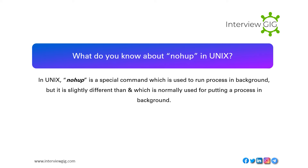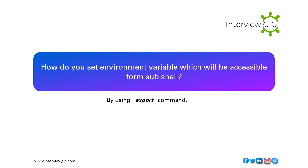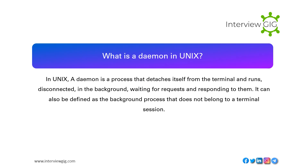What do you know about nohup in Unix? Nohup is a special command used to run a process in the background, but it is slightly different from & which is normally used for putting a process in the background. Which command is used to find if the system is 32-bit or 64-bit? By using arch or uname -a. How do you set an environment variable accessible from a subshell? By using the export command. What is a daemon in Unix? A daemon is a process that detaches itself from the terminal and runs disconnected in the background, waiting for requests and responding to them; it can also be defined as a background process that does not belong to a terminal session.